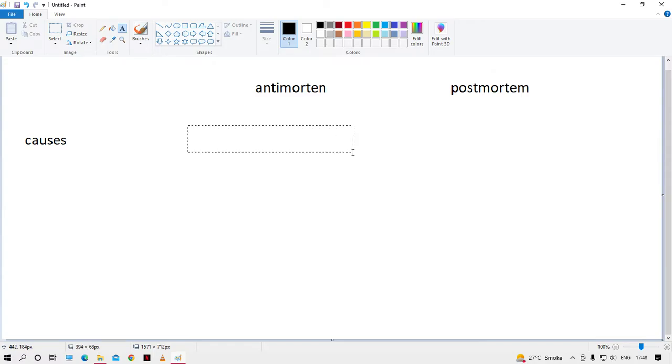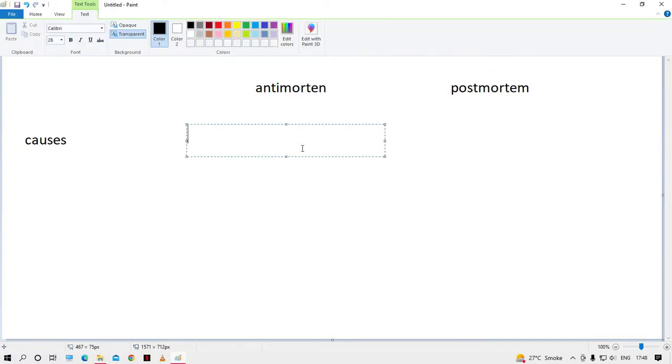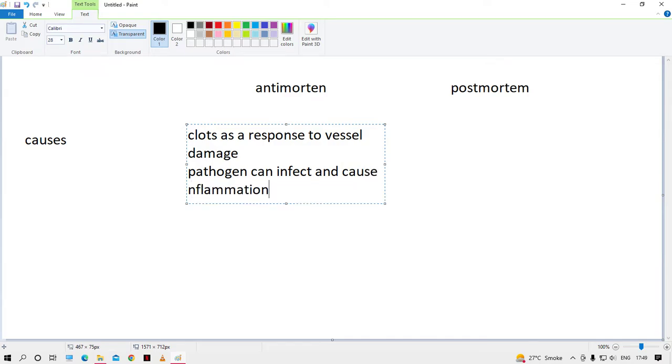We'll go one by one. The first category we're trying to learn is causes. Antemortem happens in the living individual, so the causes can be physiological, meaning the normal functioning of the body. For example, clots are formed in the body as a response to vessel damage. Also, some pathogens can infect and cause inflammation.